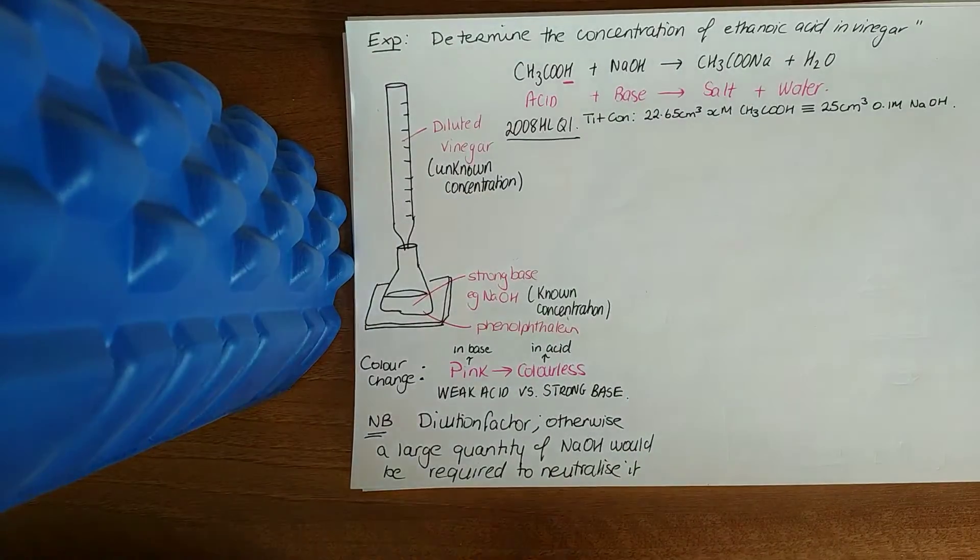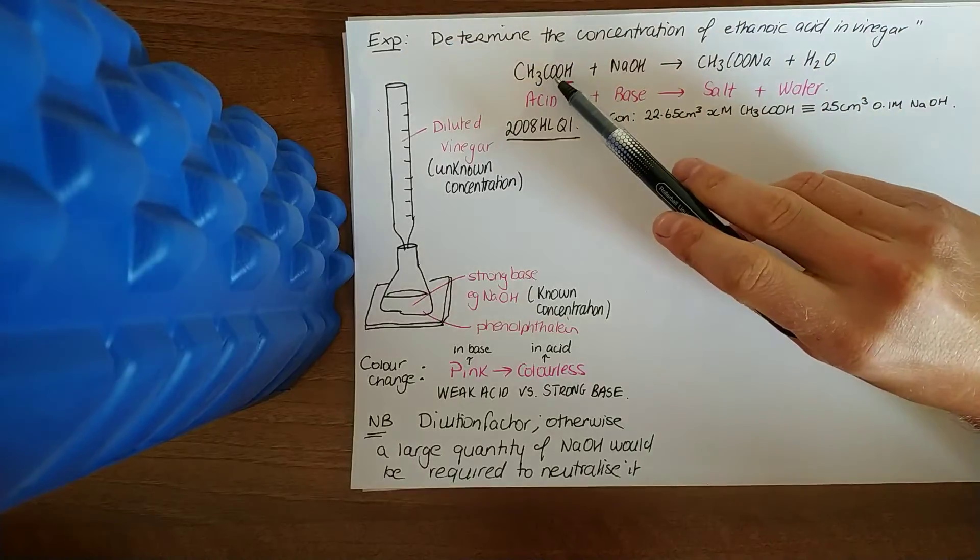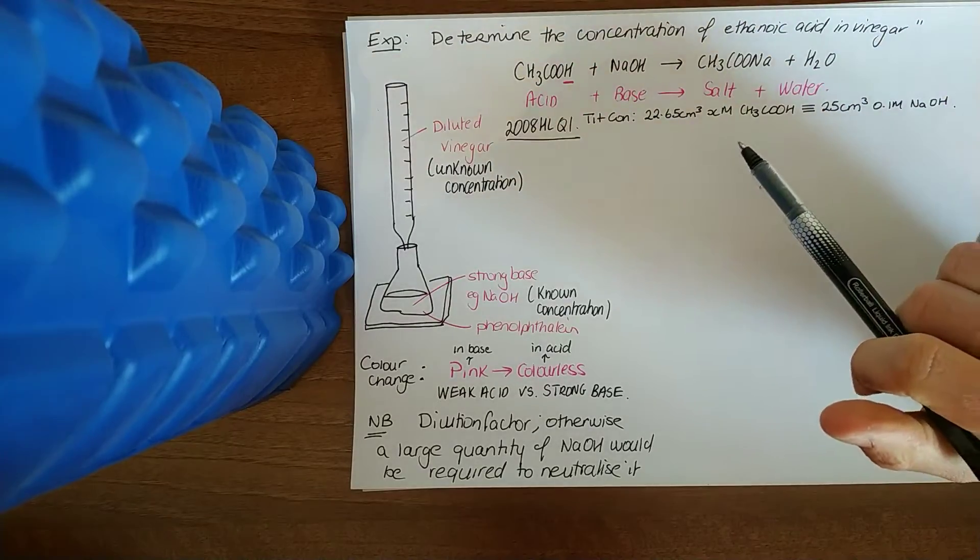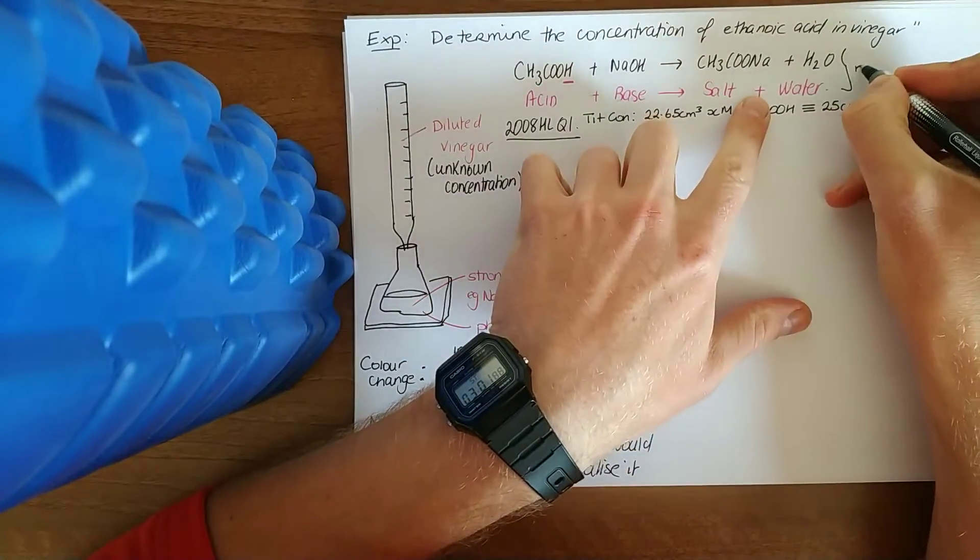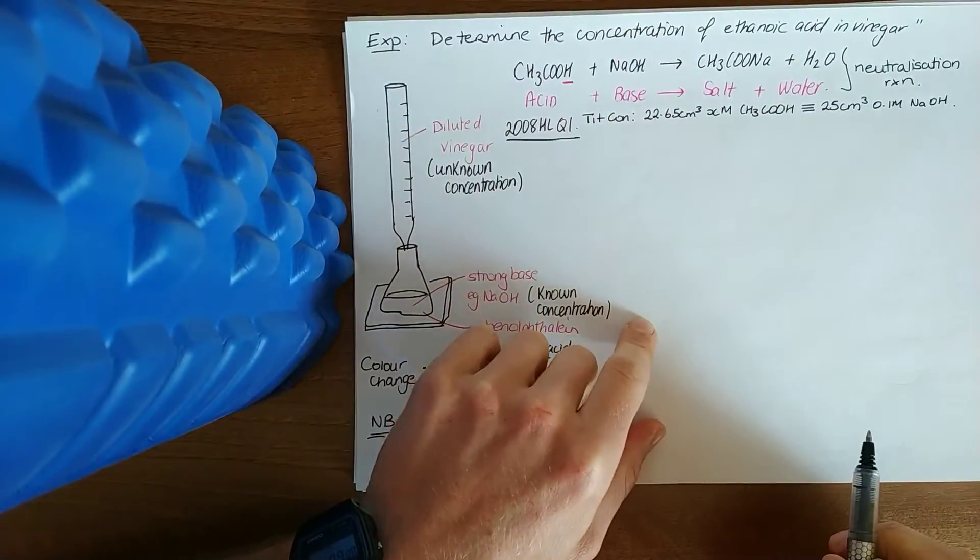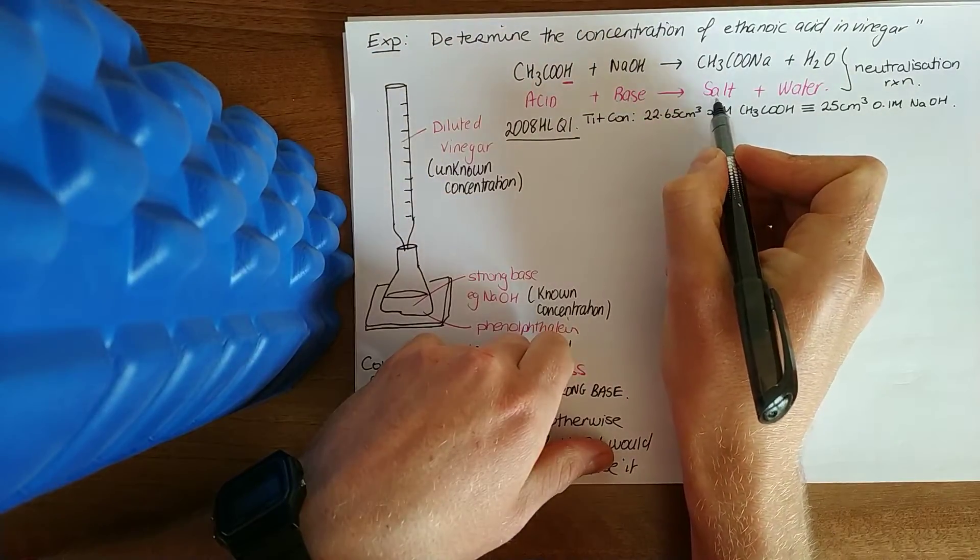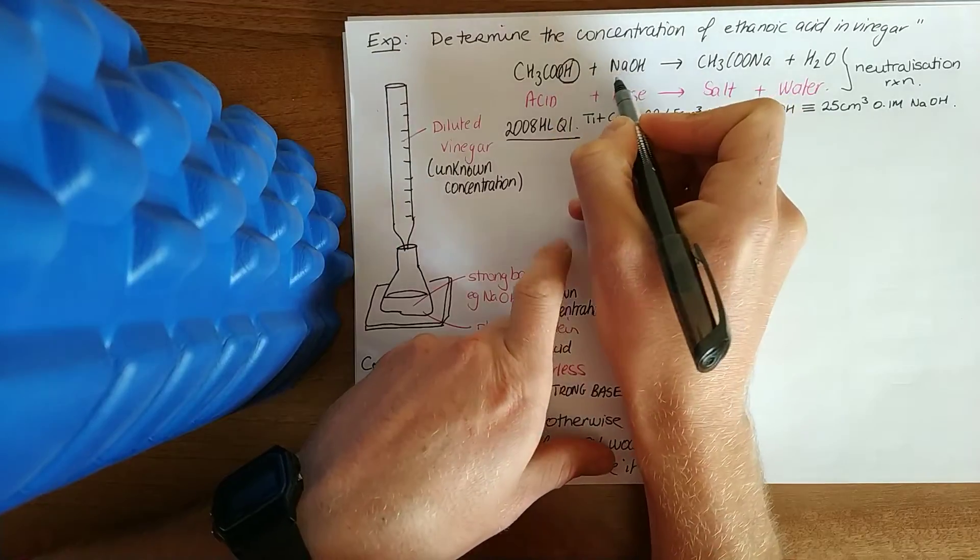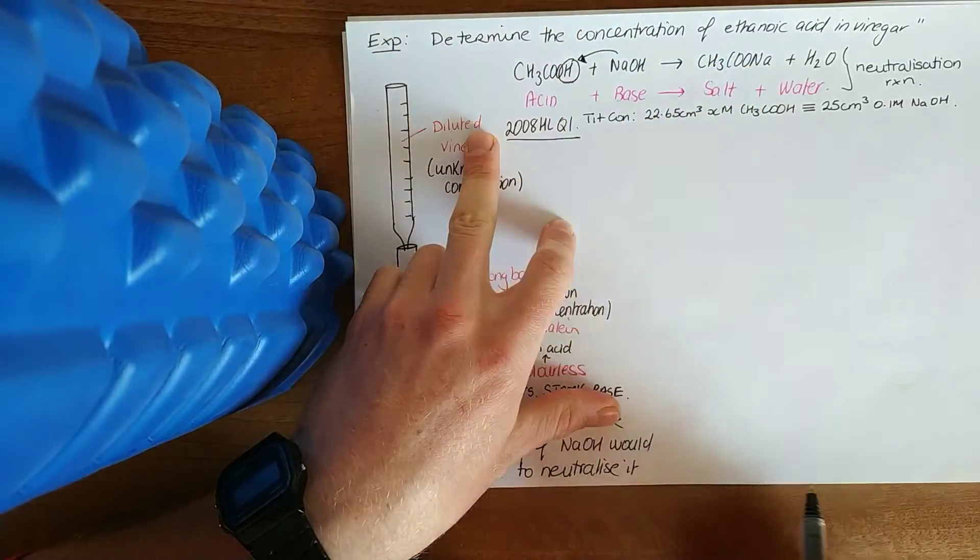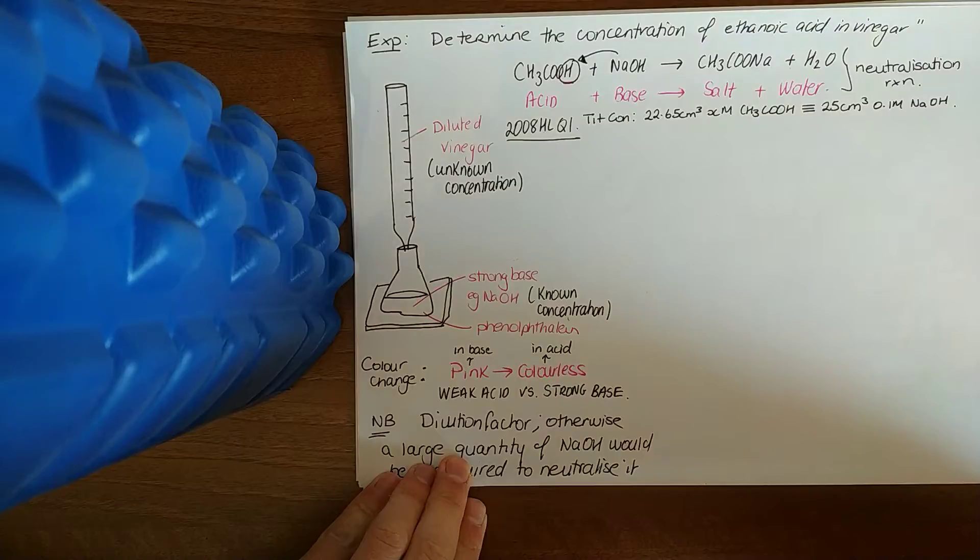We're going to look at determining the concentration of ethanoic acid in vinegar. Vinegar is a mixture of ethanoic acid CH3COOH, a carboxylic acid, and water. It's about 5-6% ethanoic acid, the rest made up of water. This is an example of a neutralization reaction, an acid and a base react to give a salt and water. The definition of a salt is the compound obtained when the hydrogen of an acid is replaced by a metal. The metal in this case is your group one or alkali metal Na, which swoops in taking the place of your H in a one-to-one ratio.